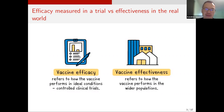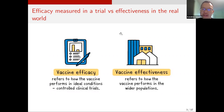Randomized clinical trials are often conducted in ideal conditions and are pretty hard to generalize. On the other hand, vaccine effectiveness often refers to the measure of how well a vaccine performs in the wider population, and may often be of more interest.